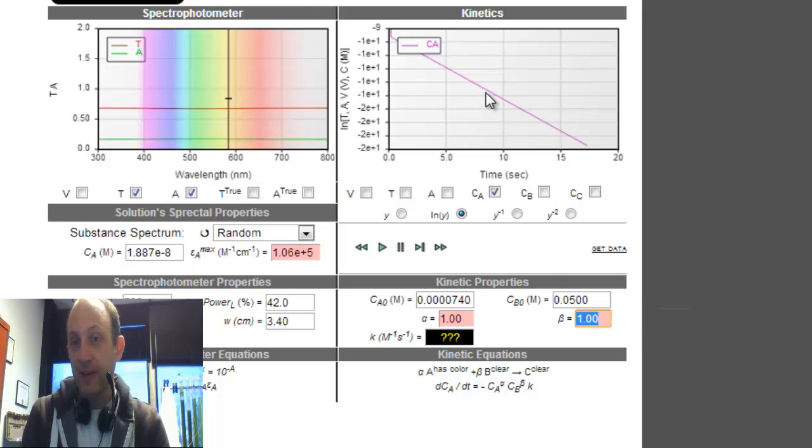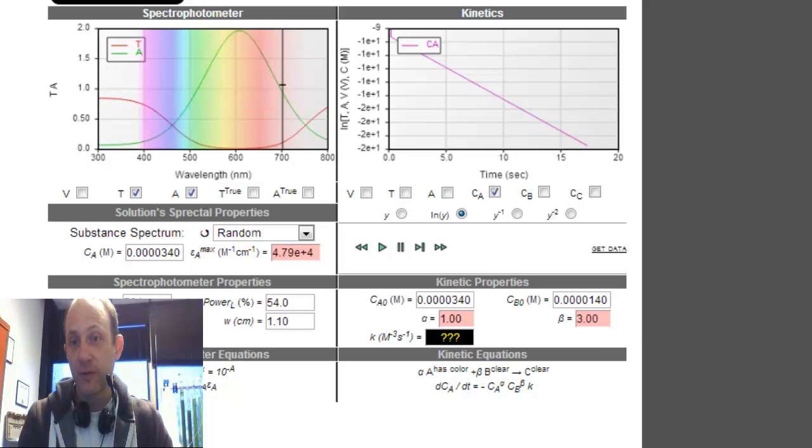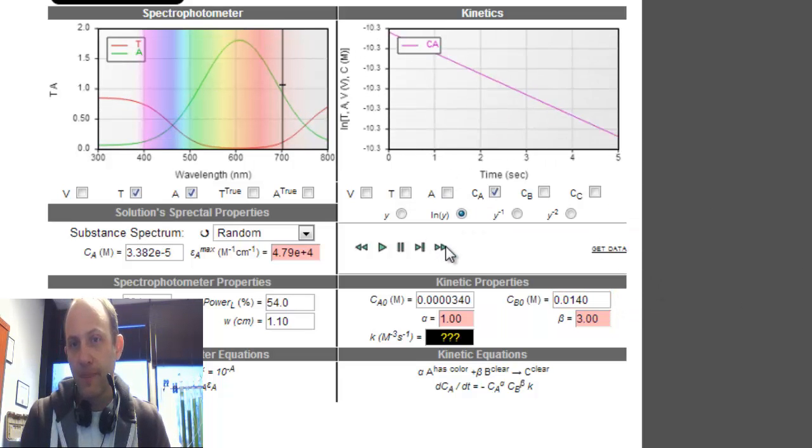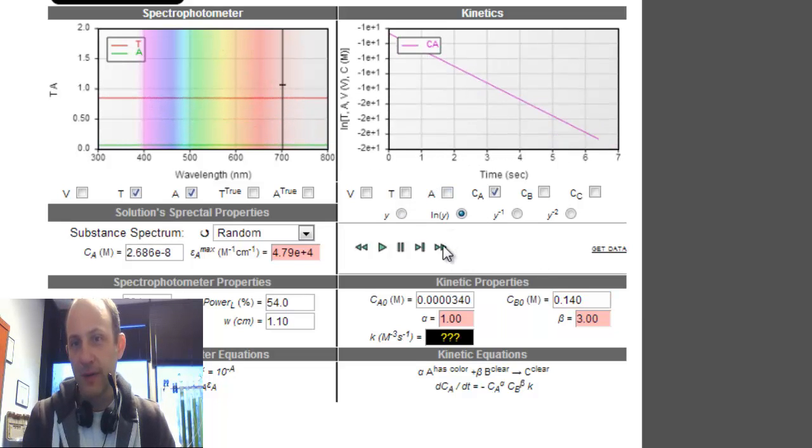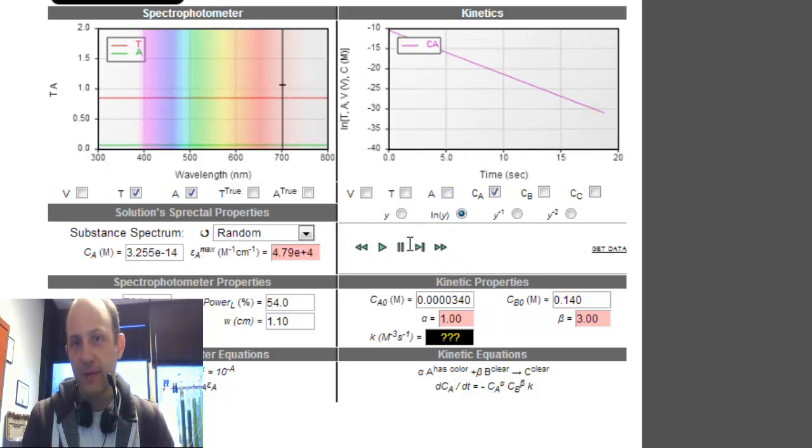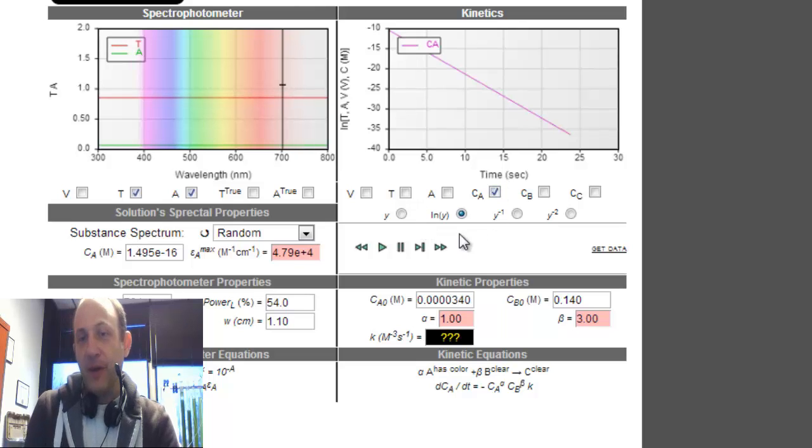So, if I take that slope, divide it by 0.05, I will get the right answer. What would happen if B was 2? Let's find, okay, here, beta is 3. So, I'm going to run this reaction again. Looks like I need a little bit more concentration of B in there. Well, anyway, you can see it's first order with respect to A, so it's linear again.